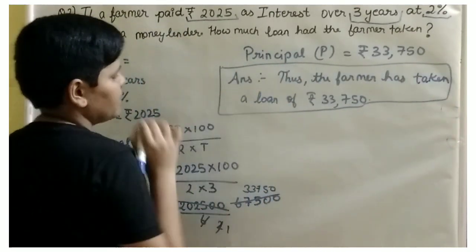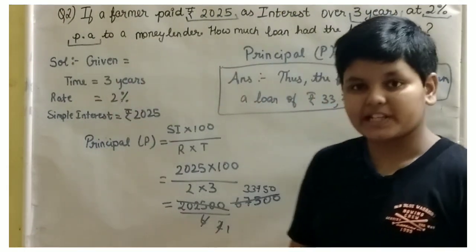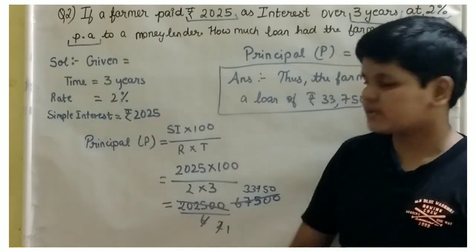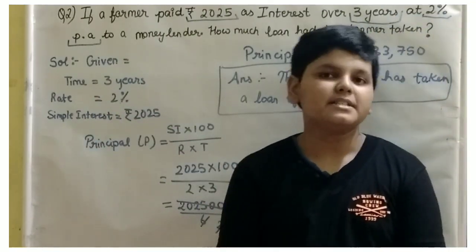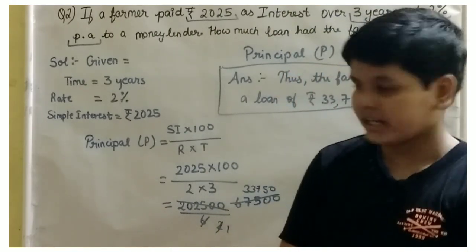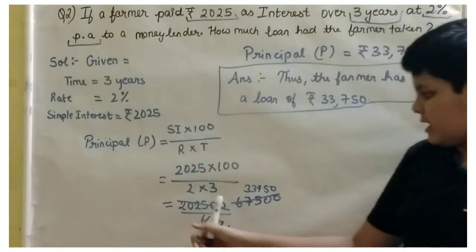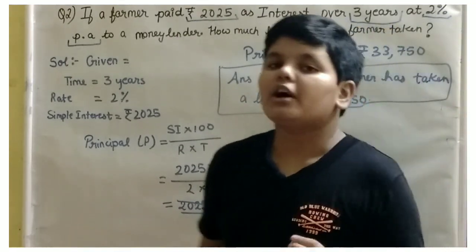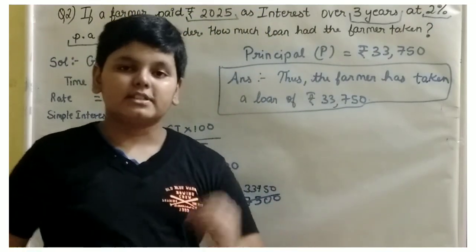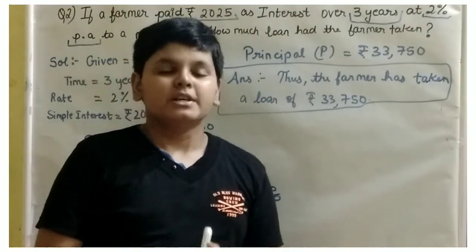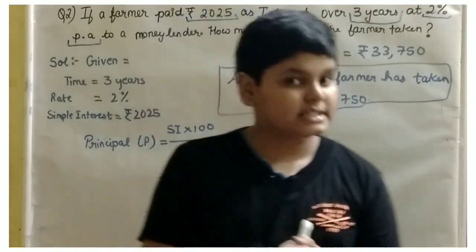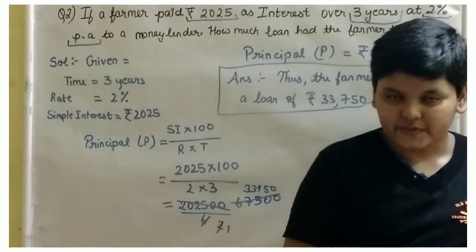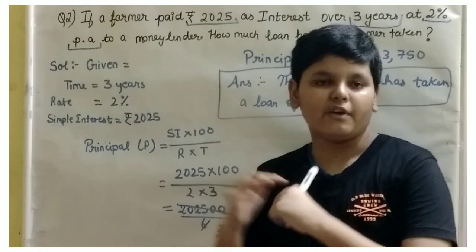Let us quickly review what we have done here. Given: time is equal to 3 years, rate is 2%, simple interest is 2,025. The formula is P equals SI into 100 by R into T. We simplified and got 33,750. You can also check this answer using the method shown in the previous problem. This was the last video about simple interest. In the next video, we are going to learn about compound interest — basics, introduction, and some formulas.